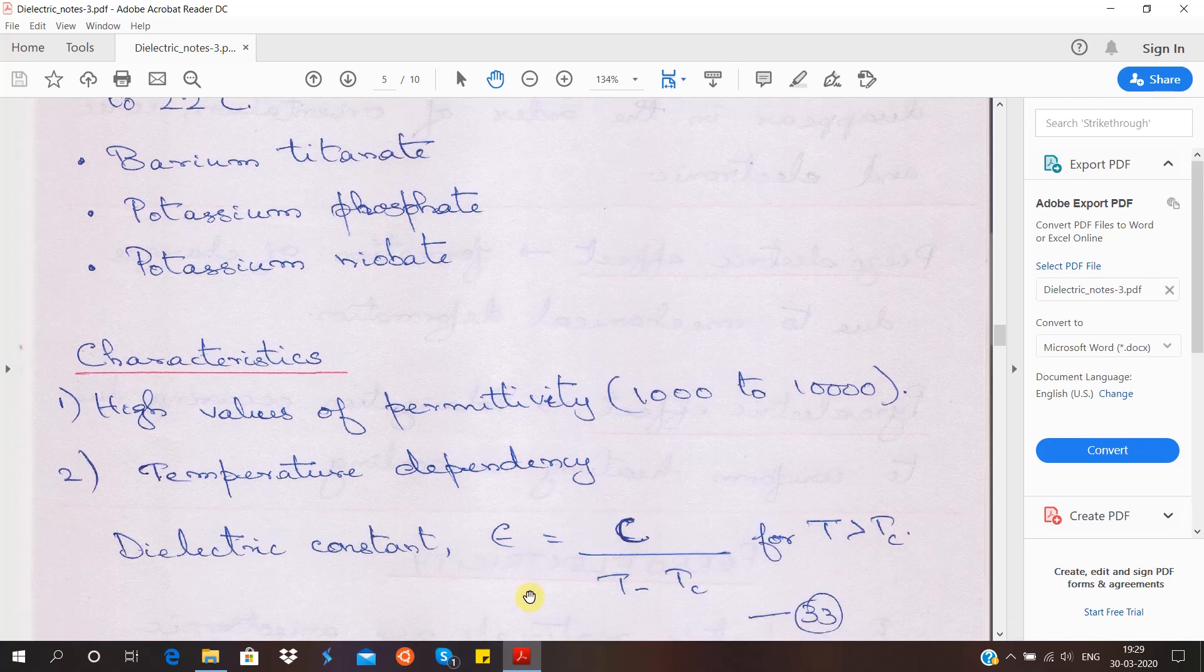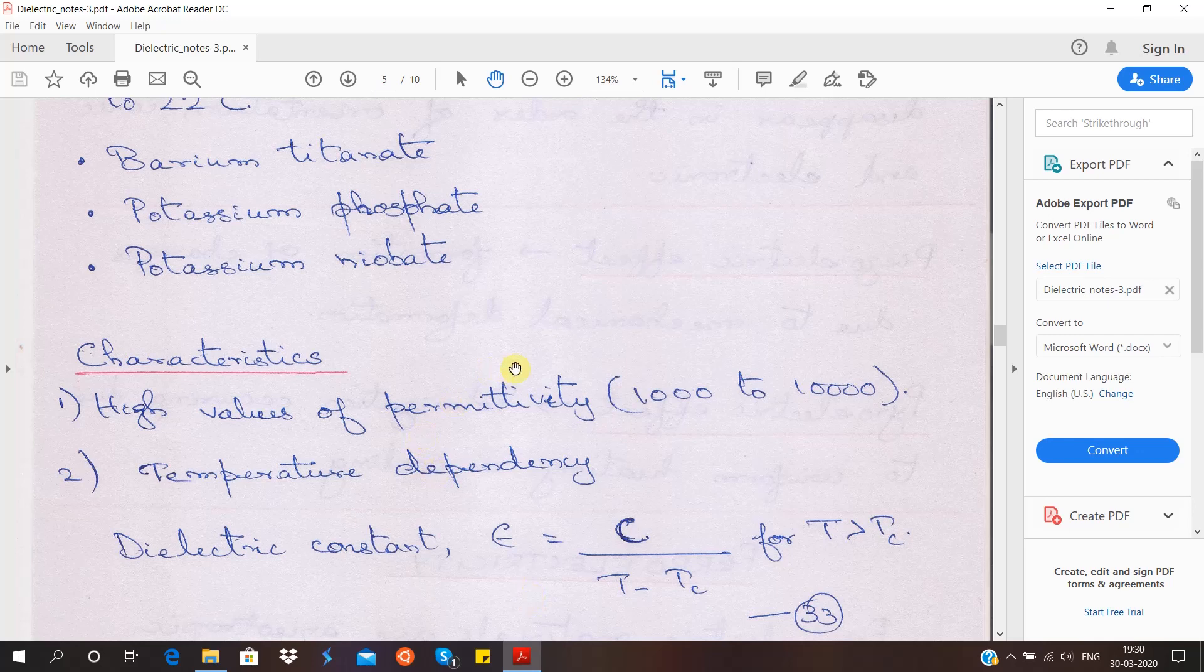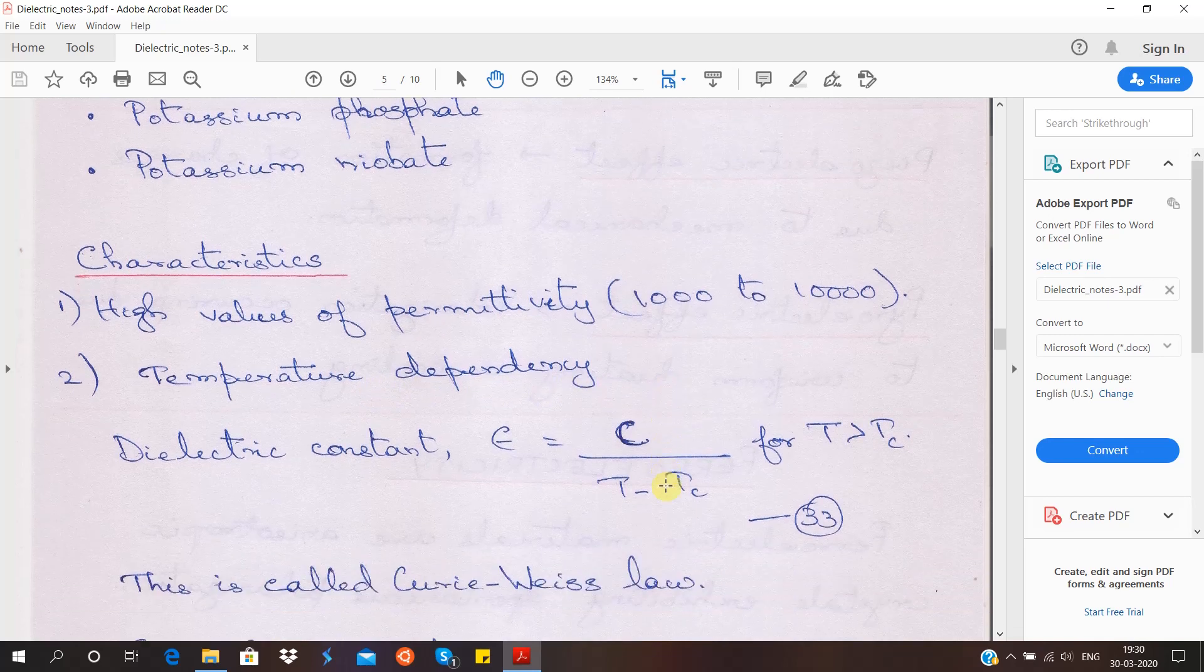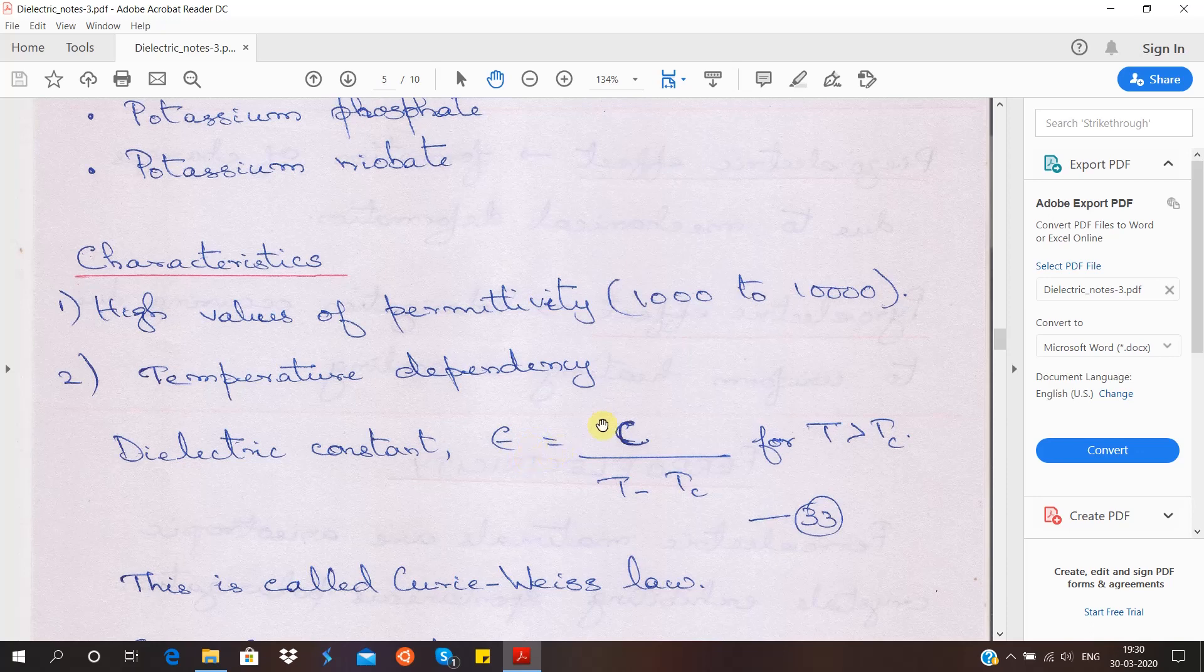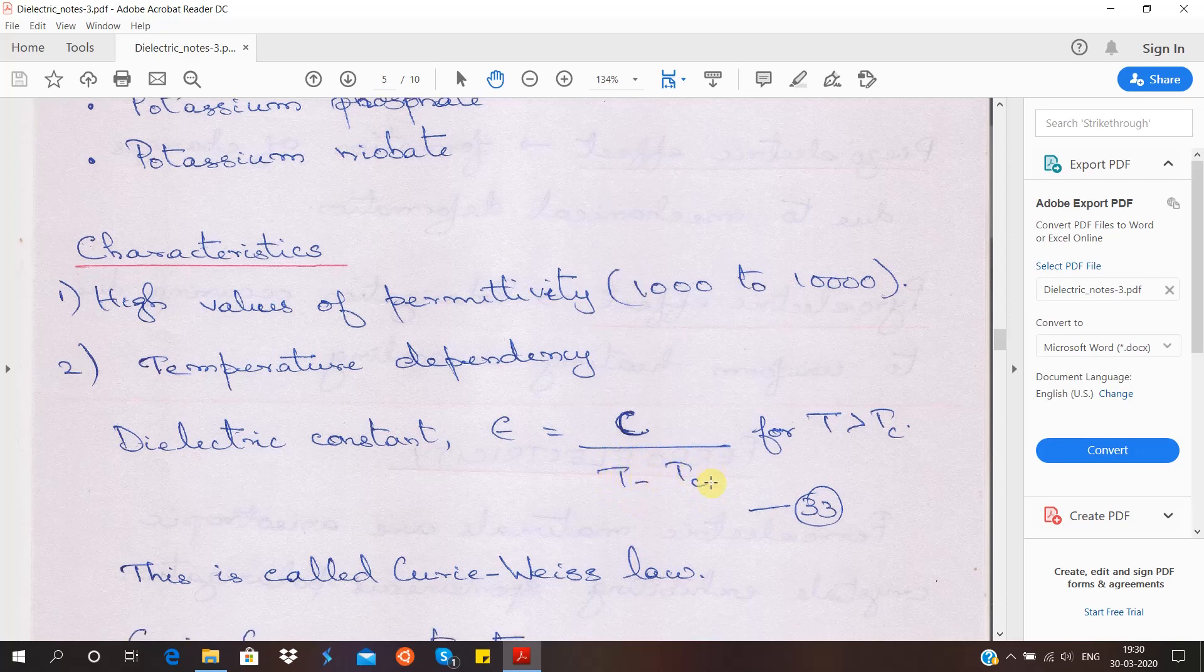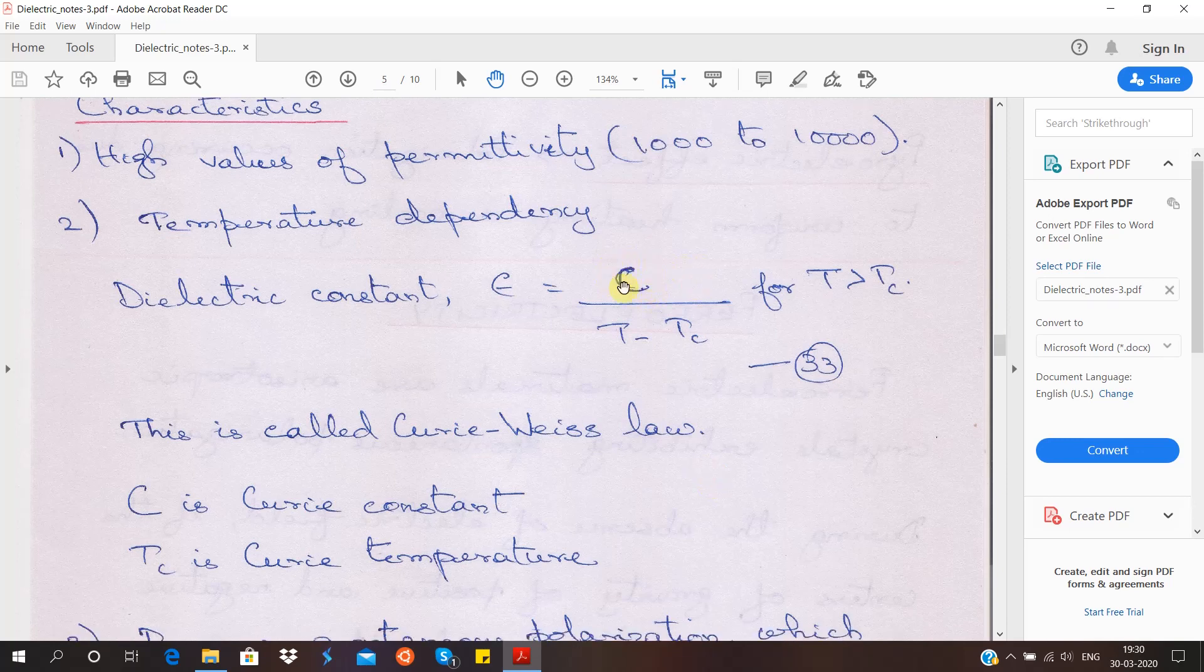Let us see some important characteristics here. Because of spontaneous polarization, it will get very high values of permittivity. The dielectric constant will be very high, ranging from 1000 to 10,000. Another point is it is dependent on temperature. It is given by Curie-Weiss law: dielectric constant epsilon r equals a constant divided by T minus Tc for any temperature T more than Tc. This Tc is known as Curie temperature. The constant here is called the Curie constant.